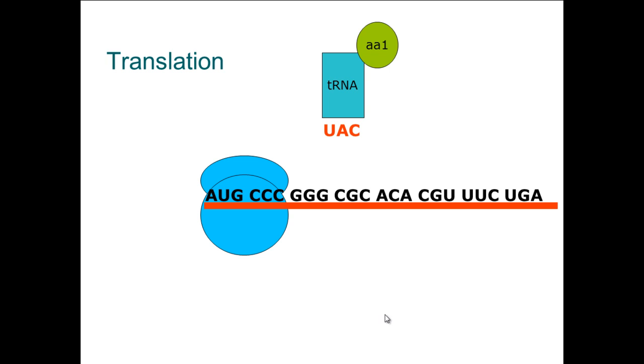This piece of mRNA here consists of 1, 2, 3, 4, 5, 6, 7, 8 triplet codes. In reality, a piece of mRNA can consist of several thousand triplet codes.